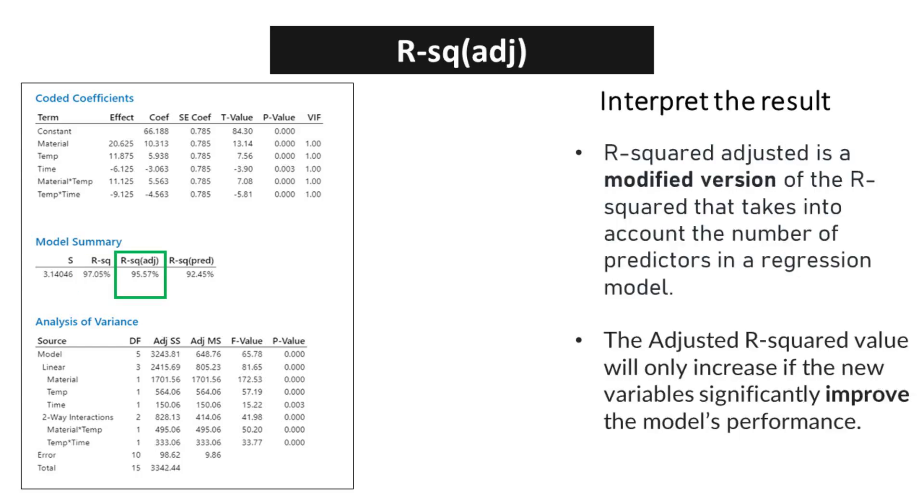While the traditional R-squared value assesses the proportion of variation explained by the model, the adjusted R-squared takes into account the potential impact of adding more predictors. When new variables are added to a regression model, the traditional R-squared may increase regardless of whether the additional variables actually contribute to the model's predictive power. This can be misleading, especially when working with a large number of predictors. The adjusted R-squared value will only increase if the new variables significantly improve the model's performance.